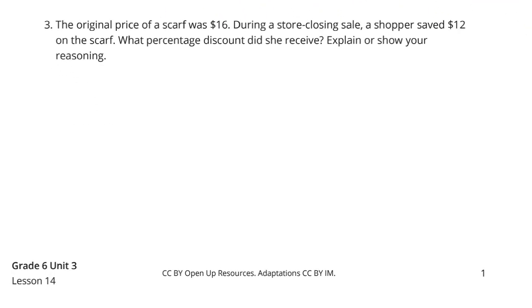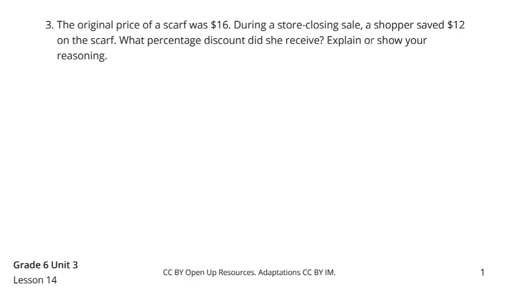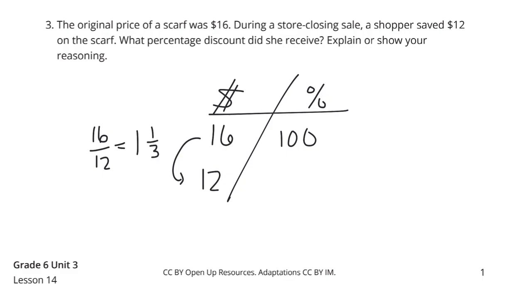Question three. The original price of a scarf was $16. During a store closing sale, a shopper saved $12 on the scarf. What percentage discount did she receive? Explain or show your reasoning. Let's go with price and percent again in our table. The original price was $16. That's our 100%. Saving $12, we need to figure out, what percent is that? How do I get from 16 to 12? If I take 16 and divide it by 12, we get the crazy decimal 1.3 repeating or 1 and a third. So if we take 100 and divide it by 1 and a third or by 1.3 repeating, we're going to get 75. So it's a 75% discount.